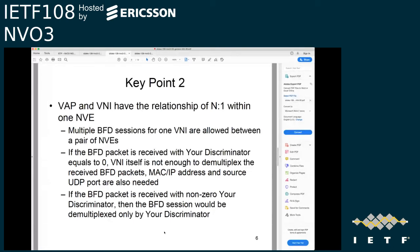Key point two in more detail: VIP and VNI have an end-to-one mapping relationship within one NVE. Due to this end-to-one mapping being allowed by the NVO3 architecture, multiple BFD sessions for one VNI are allowed between a pair of NVEs. If a BFD packet is received with your-discriminator equal to zero, the VNI itself is not enough to demultiplex the received BFD packets — MAC/IP address and source UDP port are also needed. If the BFD packet is received with a non-zero your-discriminator, the BFD session is demultiplexed only by your-discriminator.